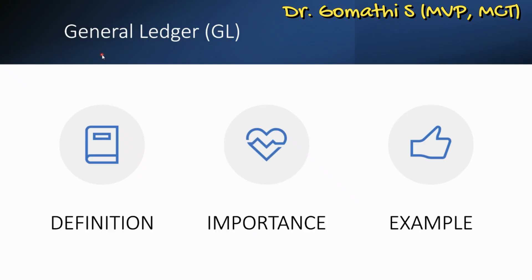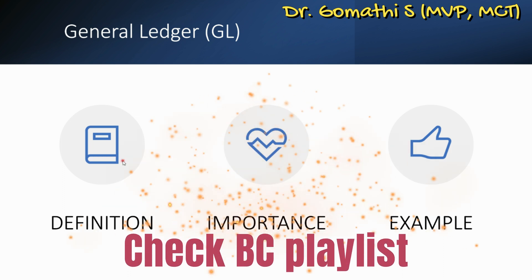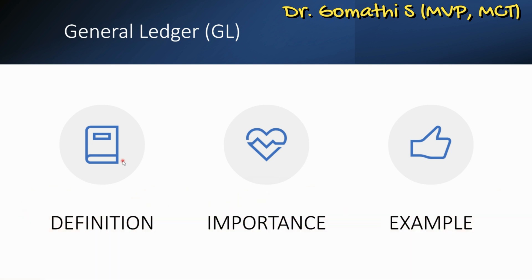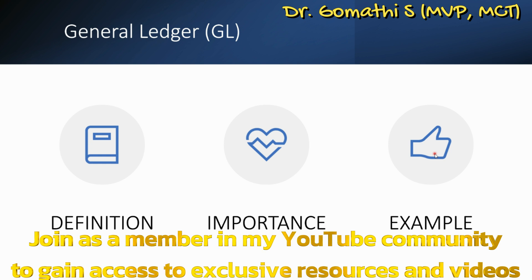Let us understand about the general ledger. General ledger is the core of any accounting system. It records all financial transactions and maintains the chart of accounts. It provides a centralized view of a company's financial information, making it fundamental for accurate financial reporting. For example, when a company purchases office supplies, a journal entry is made in the general ledger, debiting the office supplies expense account and crediting the accounts payable account.